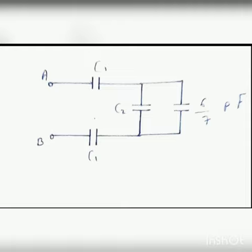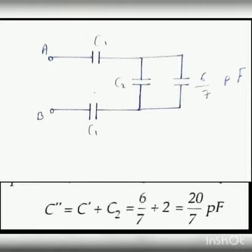Connect this 6/7 pF with C2 in parallel as shown in figure. In parallel, you will get C2 plus 6/7 pF. So now you will get result 6/7 plus 2 equals 20/7 pF.